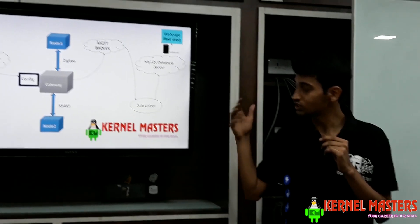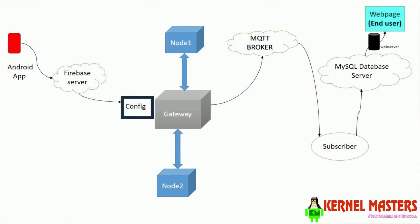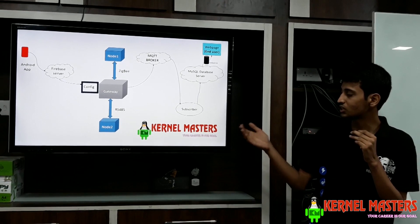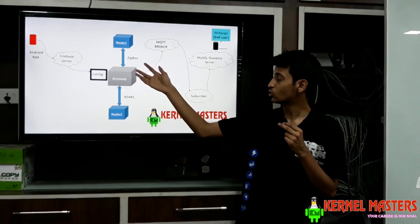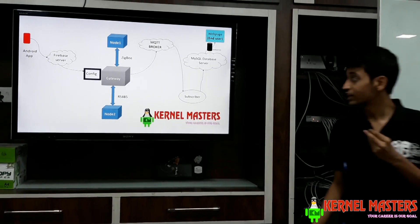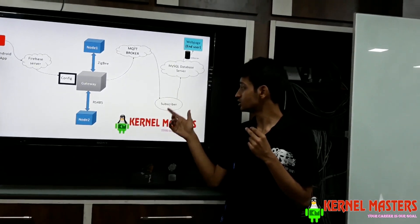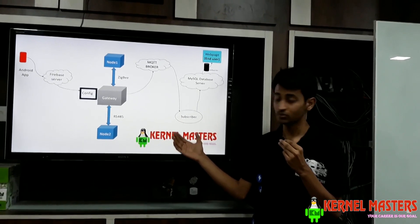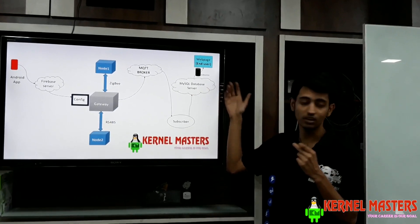The job of the gateway is to poll each of these nodes for their data — in our case, temperature and humidity — and then upload it to the server. On the node side, the job is to wait for the gateway request, and as soon as the request is received, get the temperature and humidity data from the sensor and send it back to the gateway. After the gateway receives this information, it publishes it to the MQTT broker, so that the subscriber on the other end receives the data and uploads it to the MySQL database server. After that, a web page can read this server information and display it to the end user.